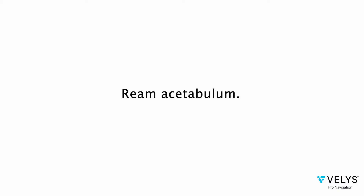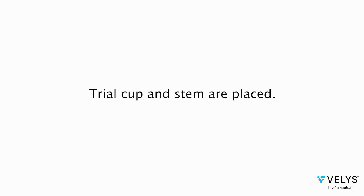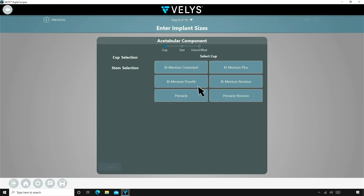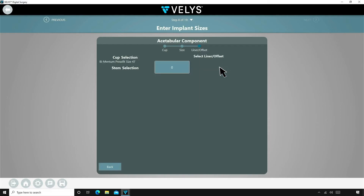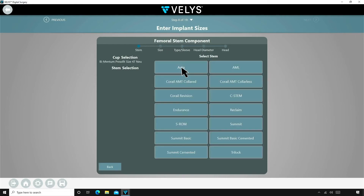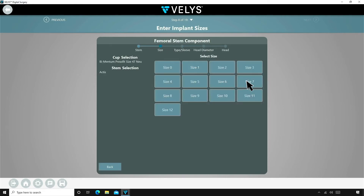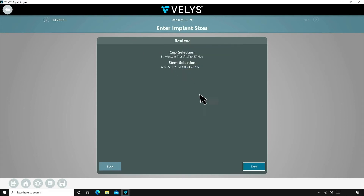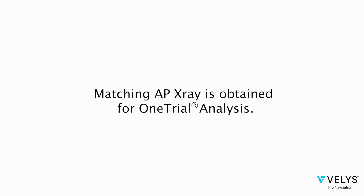I then reamed the acetabulum. Given the uncertainty of the patient's length, I altered my workflow for this case. I placed both the trial cup and stem in this patient before committing to the final components. With the trials in place, a new X-ray is obtained and the one trial analysis is run.